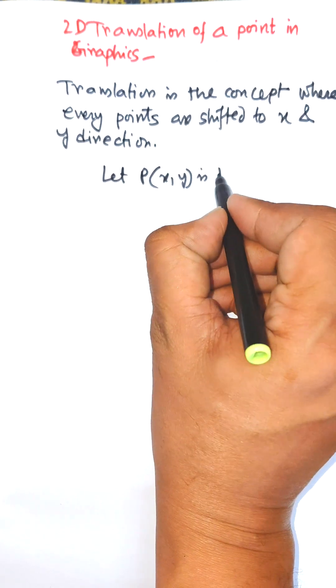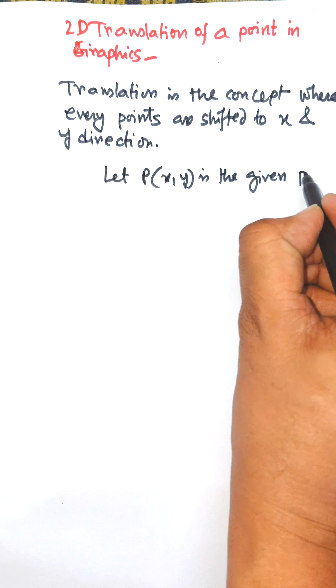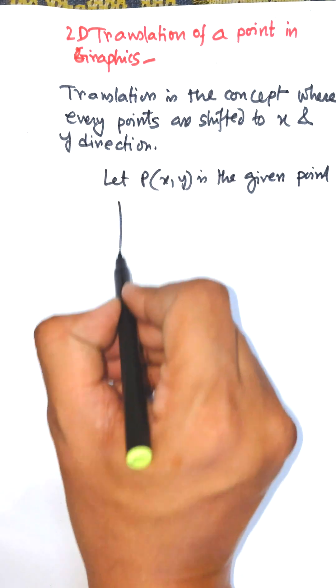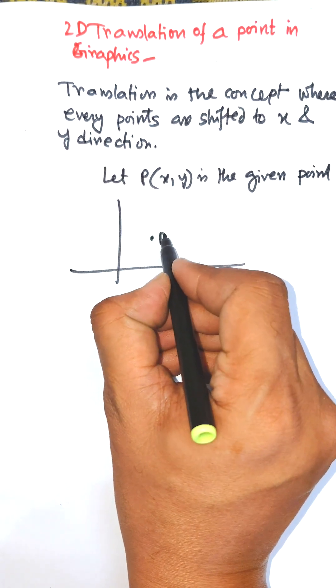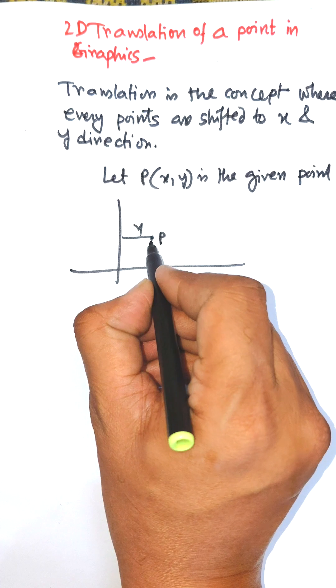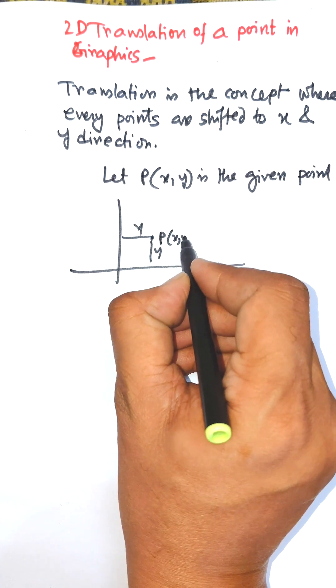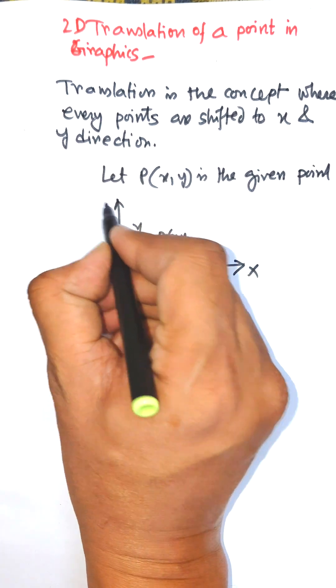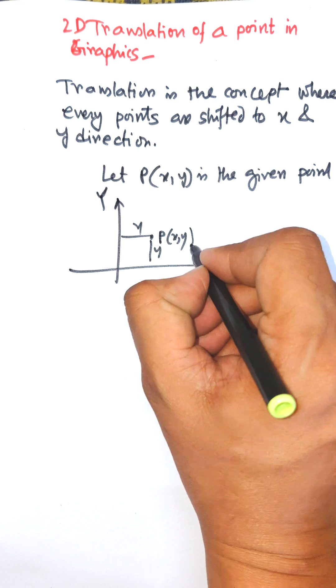So this is the initial point P. This is the x and y coordinates. This is the x direction, this is the y direction. Now we need to translate this point along the x-axis and then shift it in the y-axis.